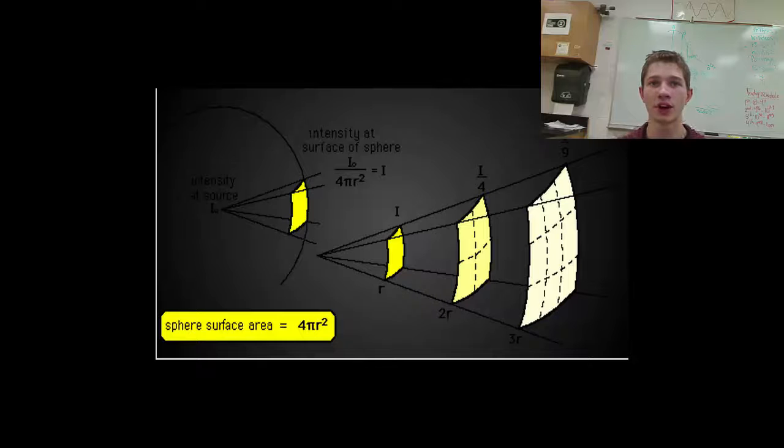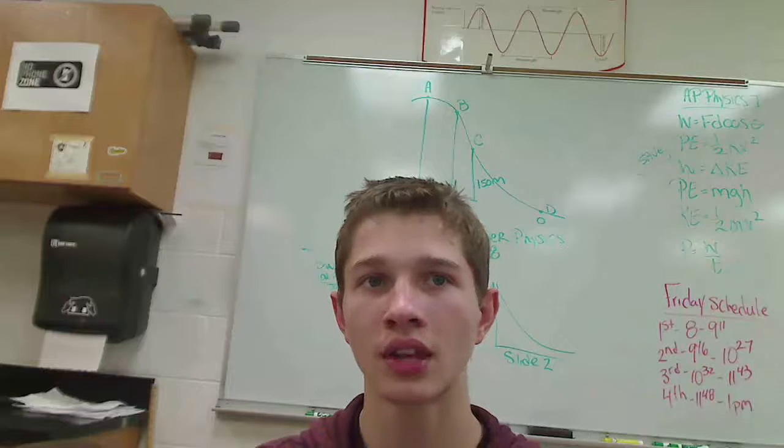These observations are used to determine how fast the universe is expanding in different parts. The Dark Energy Survey uses these measurements to study expansion, which gives a better understanding of dark energy and its role in the universe.